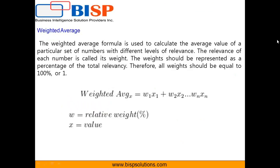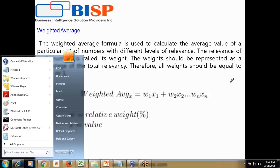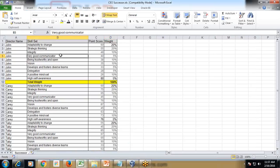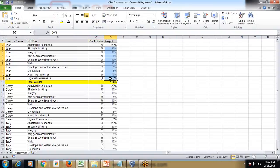In order to find a weighted average, the formula is: weighted average equals the value multiplied by its relative weight, summed across all items. The weight factor represents relevance and should be expressed as a percentage of total relevancy, with the grand total equaling 100%. In our Excel source, we have three directors, their skill sets, their total point scores across different subjects, and the weight factor.